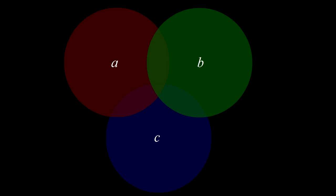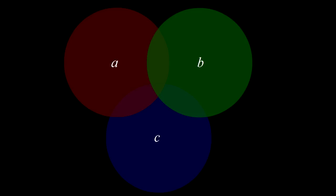Alternately, we can illustrate Bell's inequality using a Venn diagram. Suppose the state X of a particle corresponds to a position on the screen. If that's inside the red circle, then the particle will pass test A, while if it's outside it will fail. Likewise for the test B and test C circles.